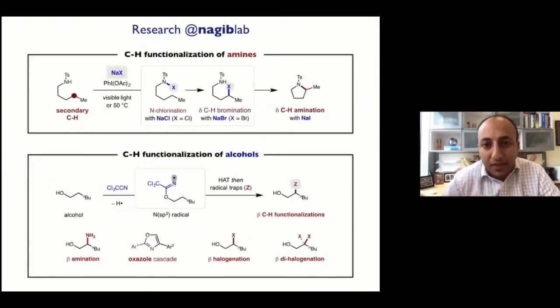And so just to summarize what I've shown you today, the two stories are the C-H functionalization at the delta position of amines and trapping the corresponding intermediates, as well as the beta-selective functionalizations of alcohols via these imidate radicals to access a family of products.